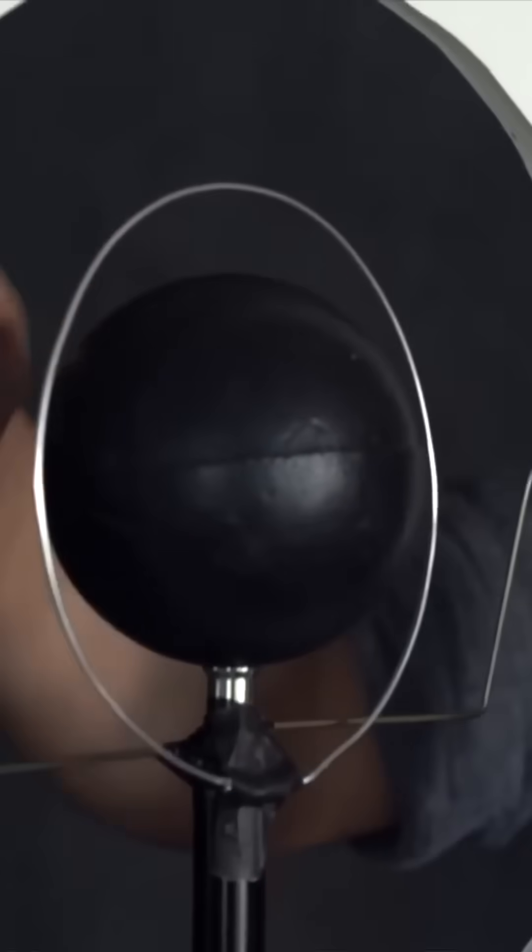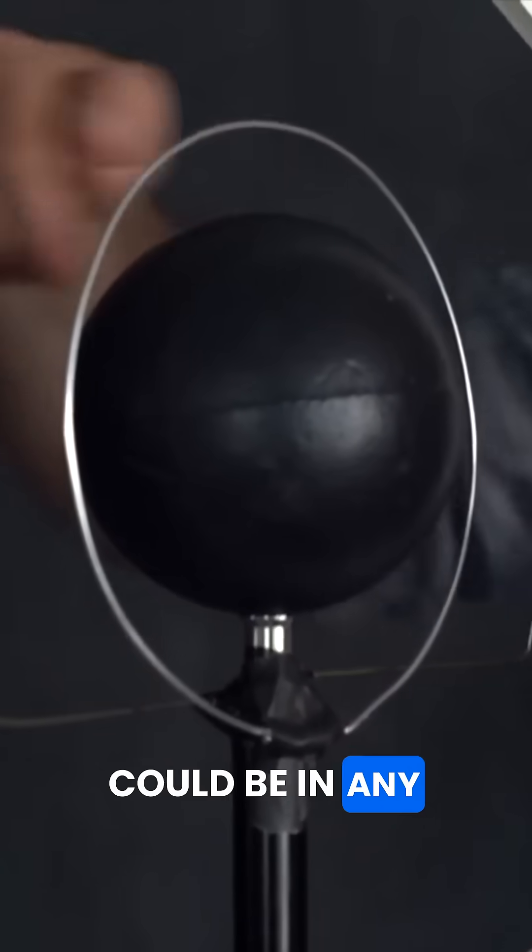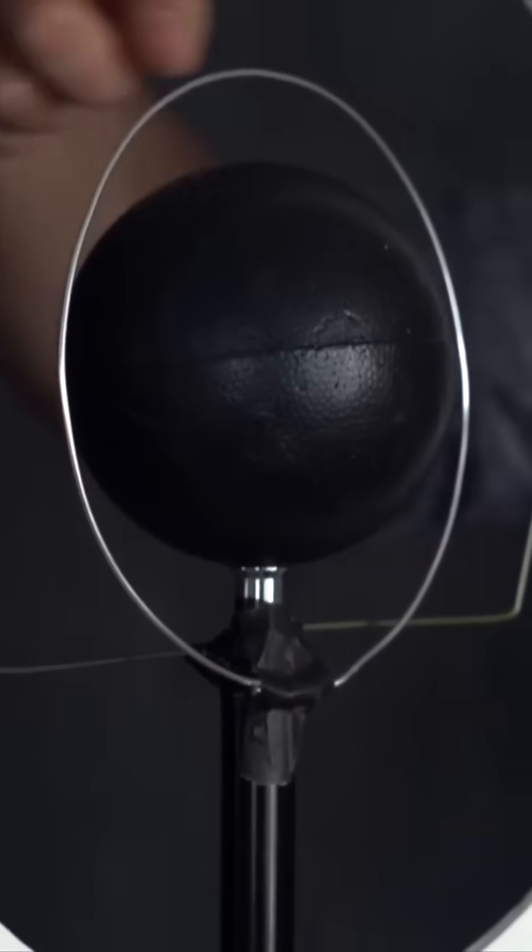Now here I'm representing it with a ring, but really this could be in any orientation. So it's a sphere of photon orbits.